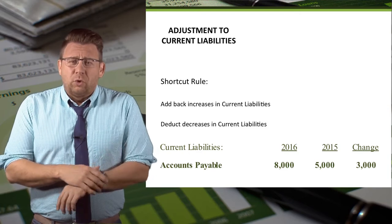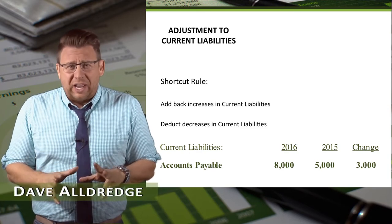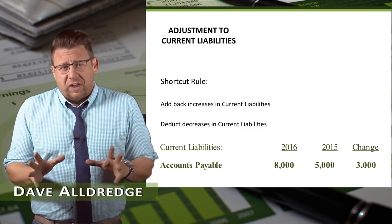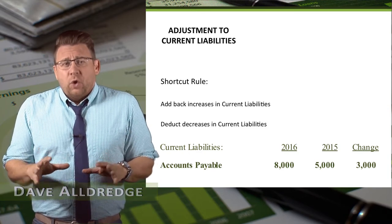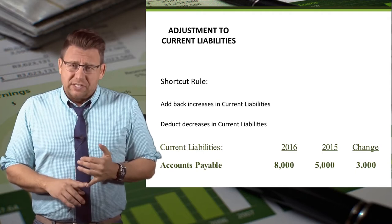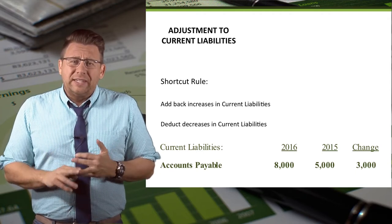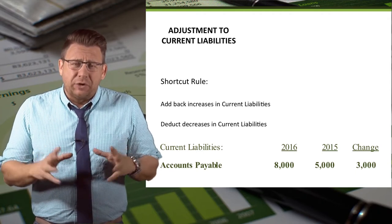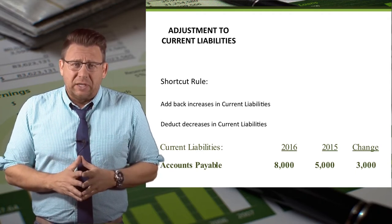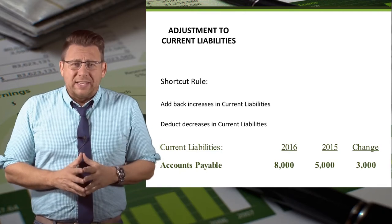Our shortcut rules for treating the changes in current liabilities are as follows: we add back increases in current liabilities and we deduct decreases in current liabilities. Let me show you why that is.